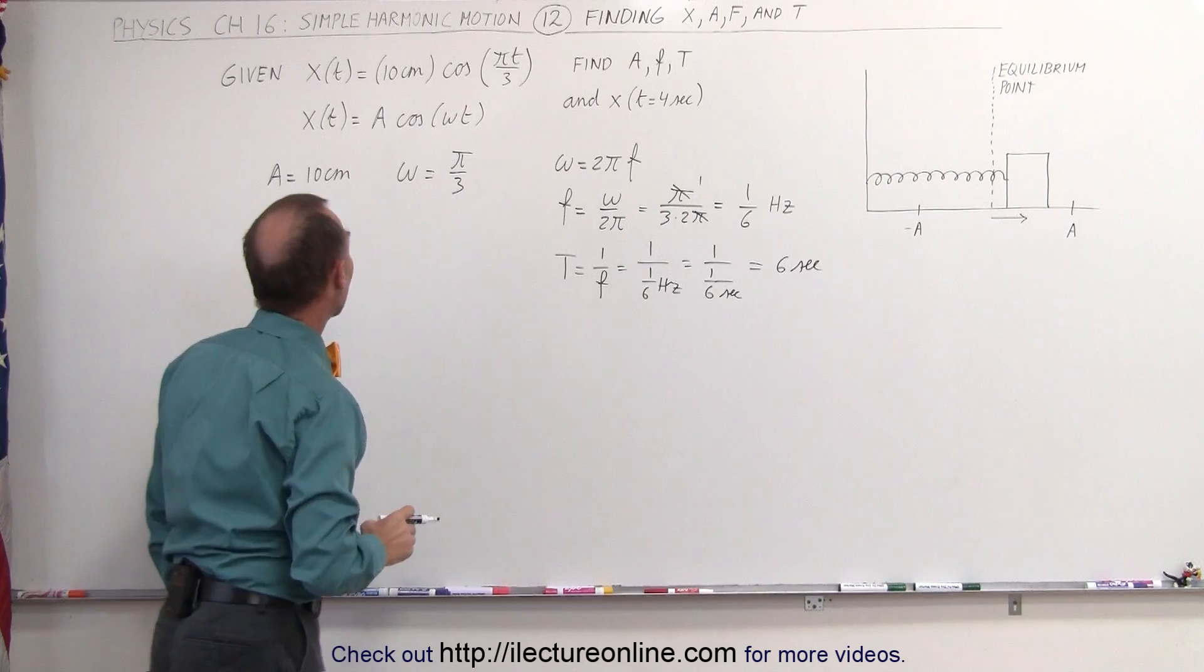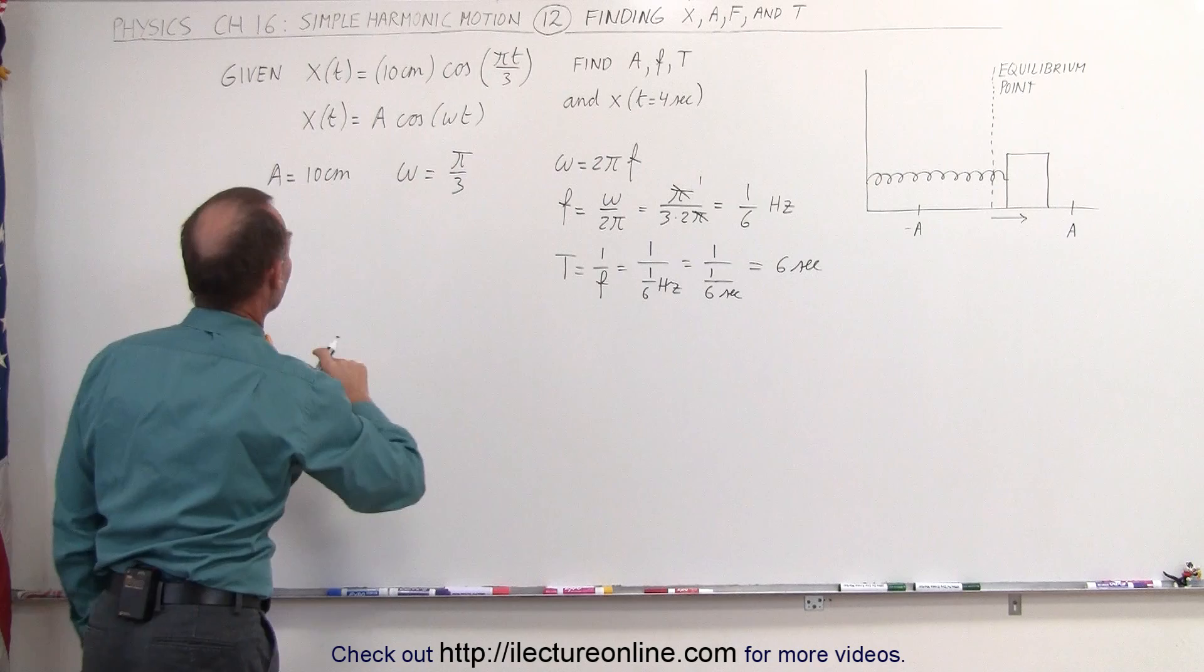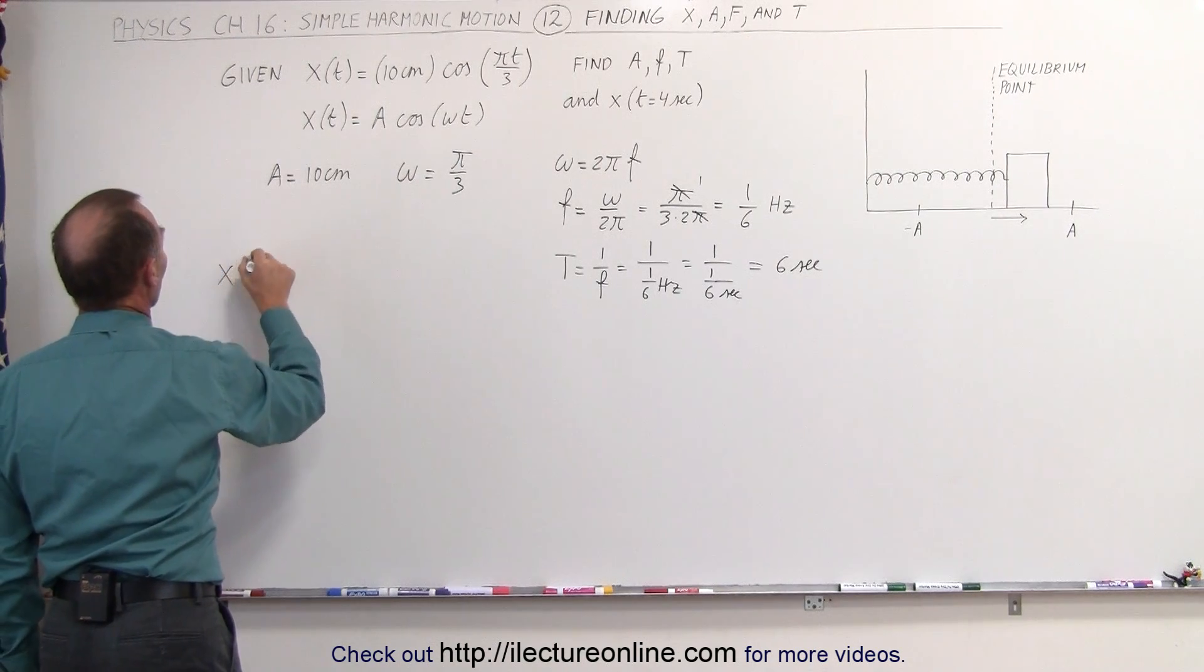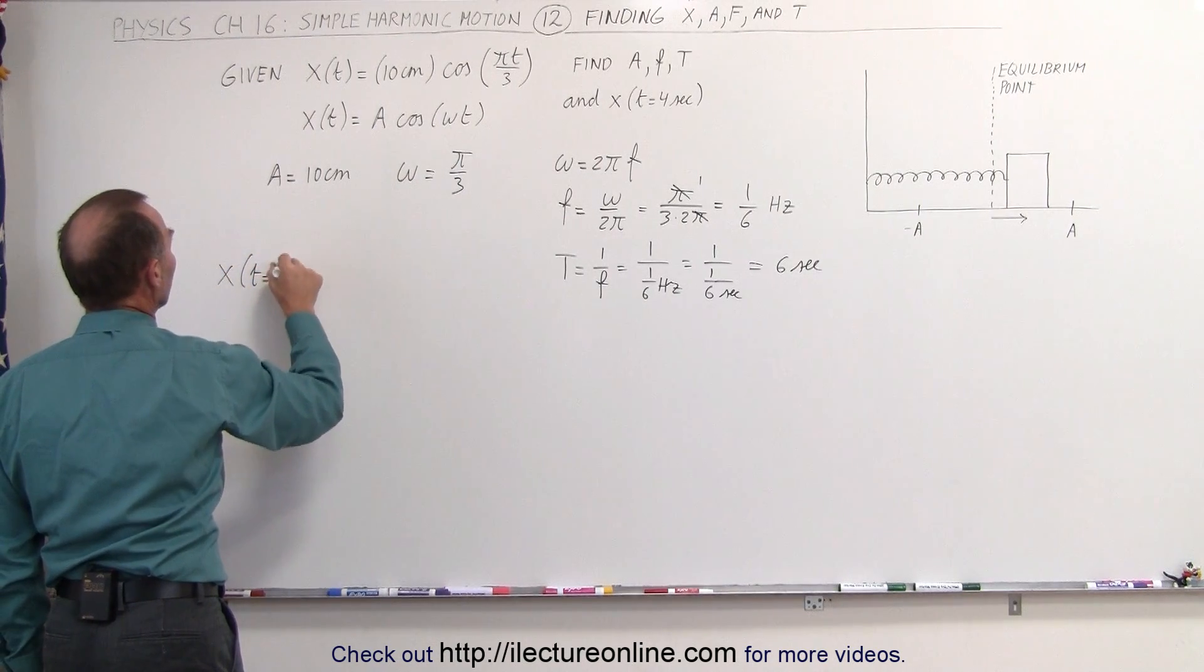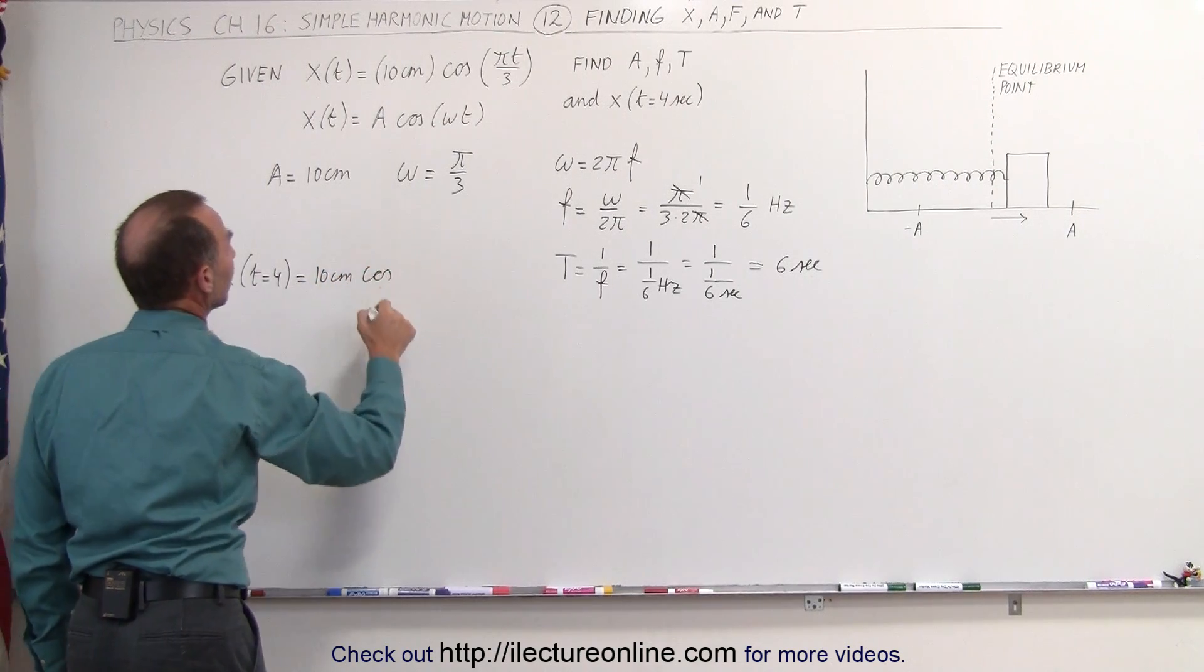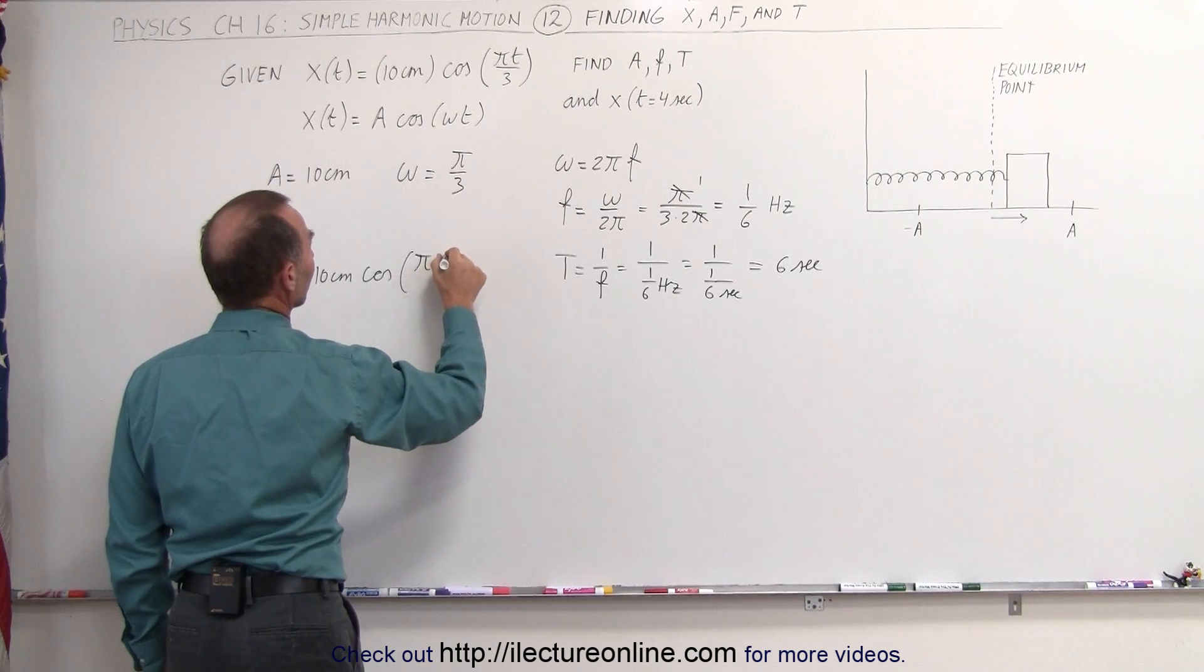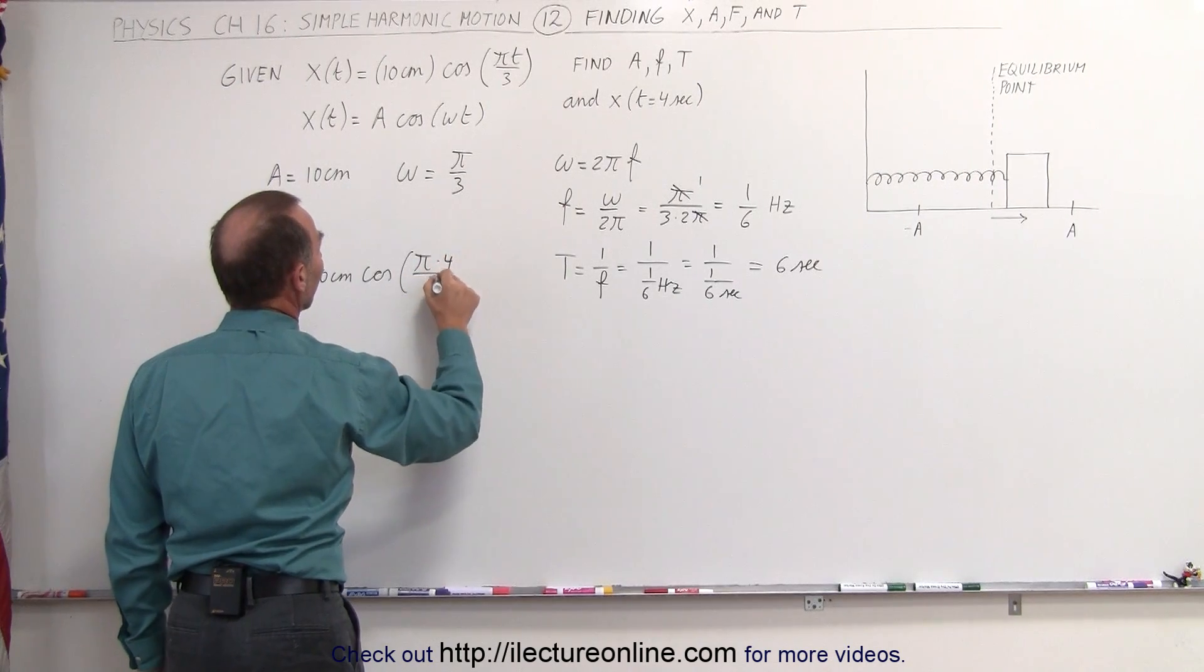And finally, now we're supposed to find the position as a function of time when the time is equal to 4 seconds. So x when t is equal to 4 is equal to 10 centimeters times the cosine of pi times time, which is times 4 seconds, divided by 3.